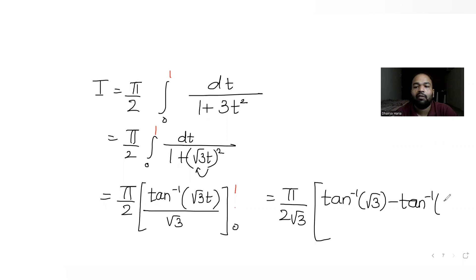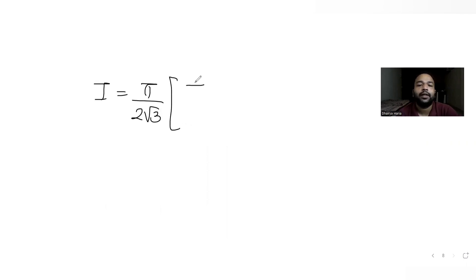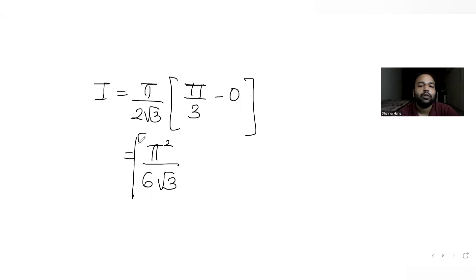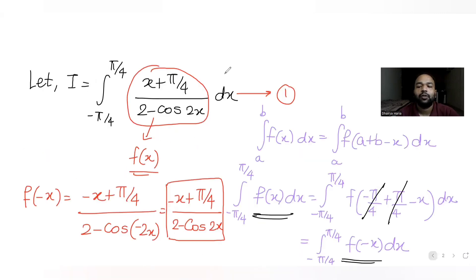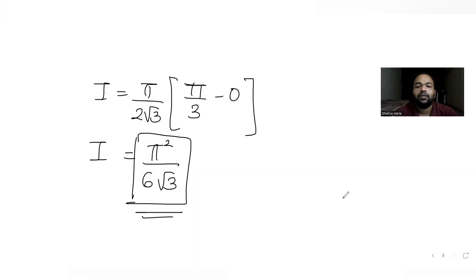Since tan⁻¹(√3) = π/3, we get I = (π/2)·(1/√3)·(π/3) = π²/(6√3). Looking at the options, this matches option B. So the answer for the value of the integral is π²/(6√3), which is option B.